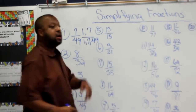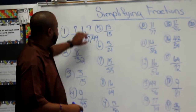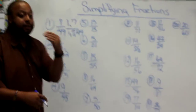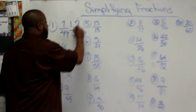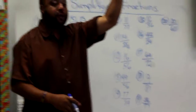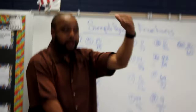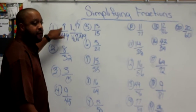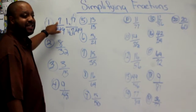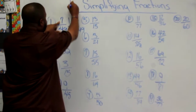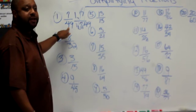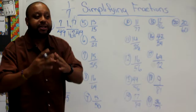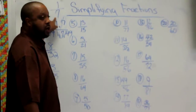What numbers do you see in the numerator and the denominator? Which numbers are common? 7. So now we are going to divide the numerator and the denominator. By what number? 7. Very good. So let's look at 7 over 49. What is 7 divided by 7? 1. And 49 divided by 7? 7. So 7 over 49 simplified is 1 over 7.